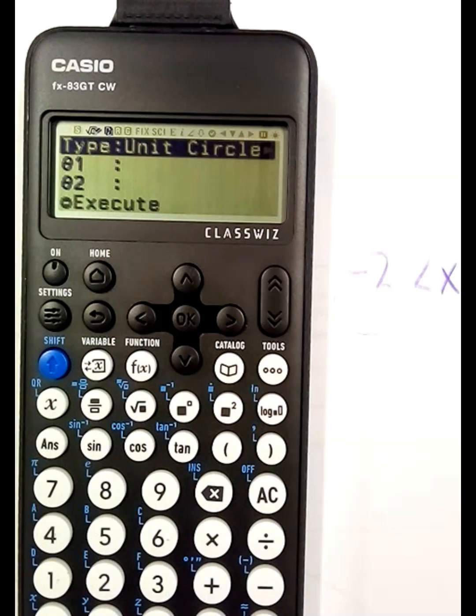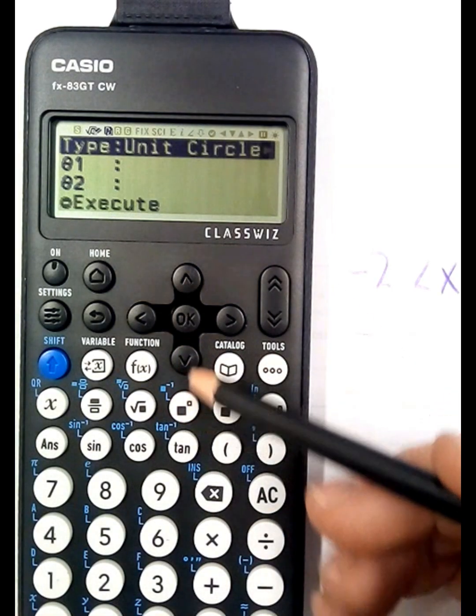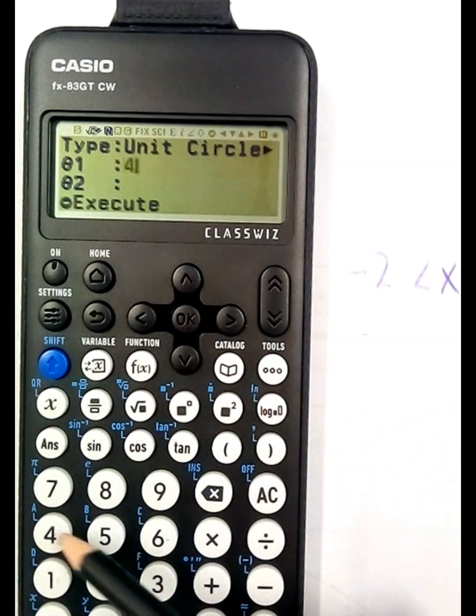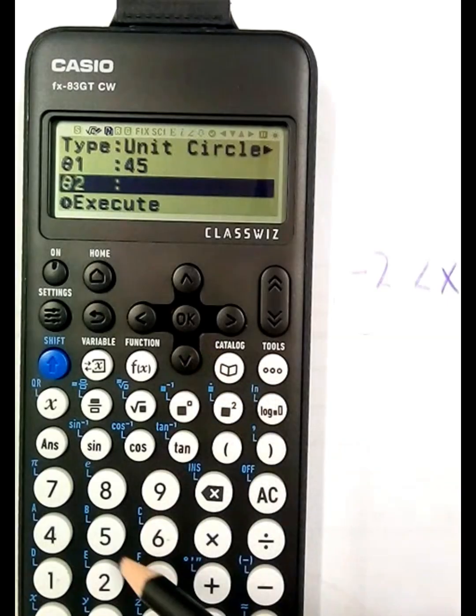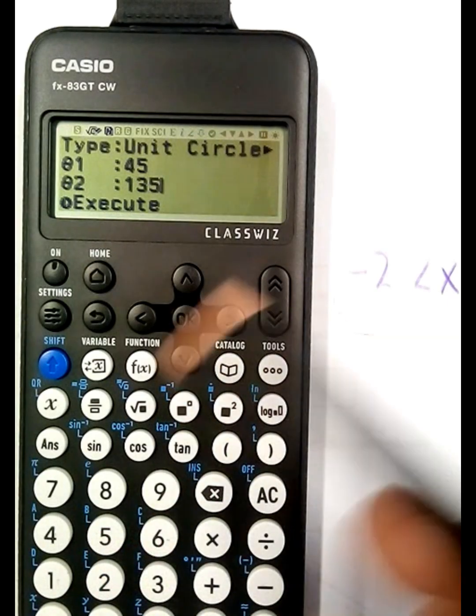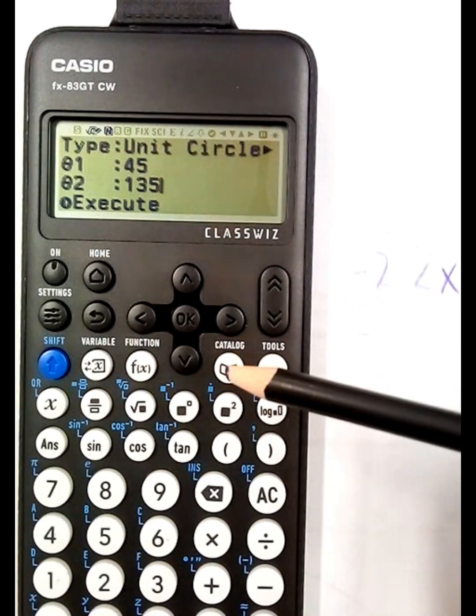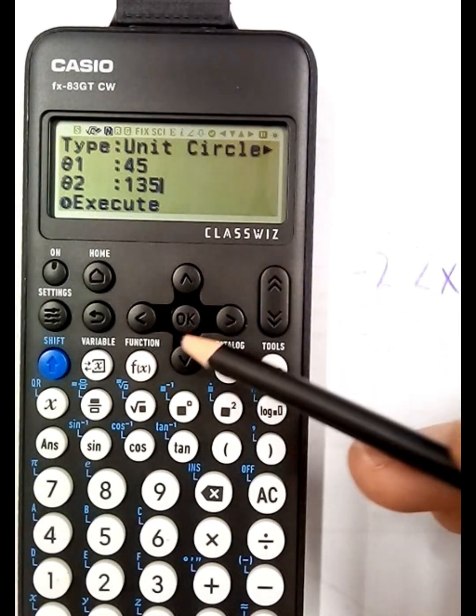Now type unit circle and then you've got all these little funny little things here. So if you want to select unit circle you obviously go straight here. So let's put in 45 degrees and let's put in 135 degrees, because I know both of them have the same sine. So let's execute that and let's see what happens.